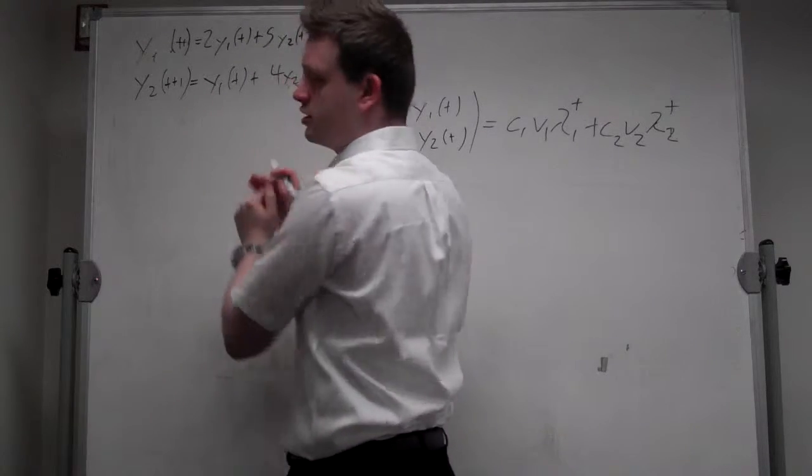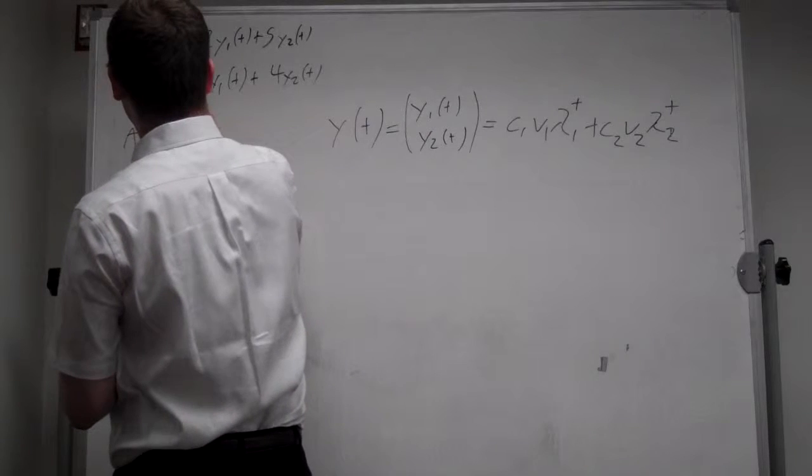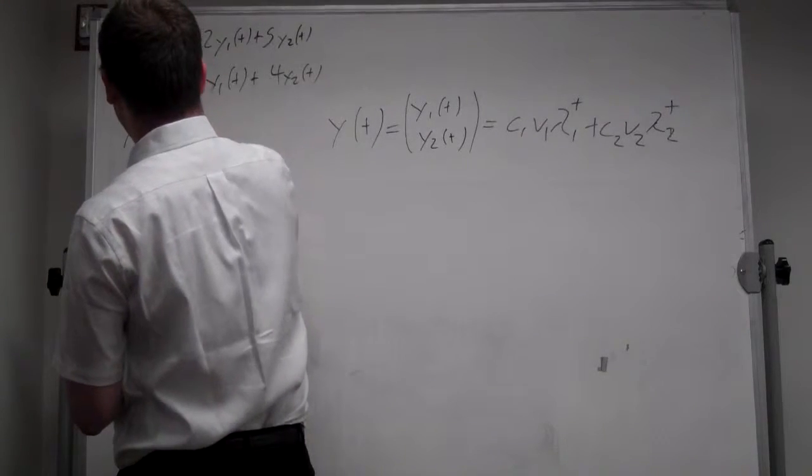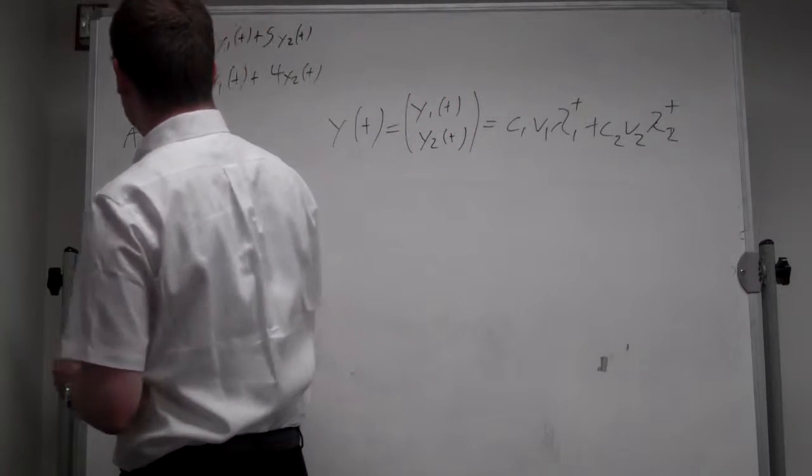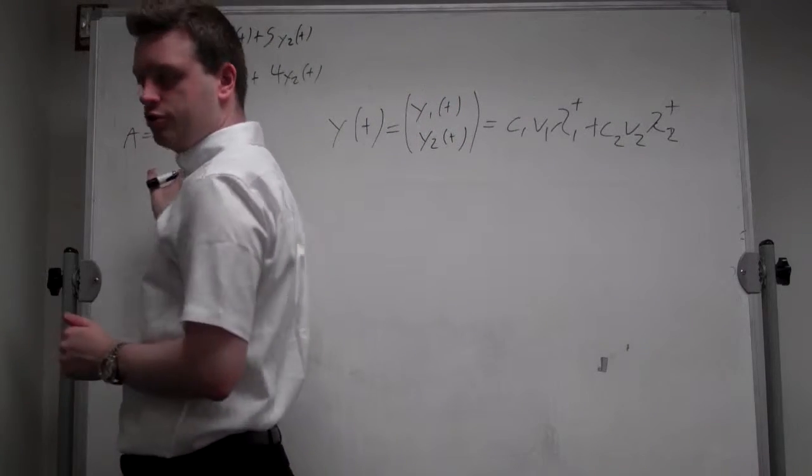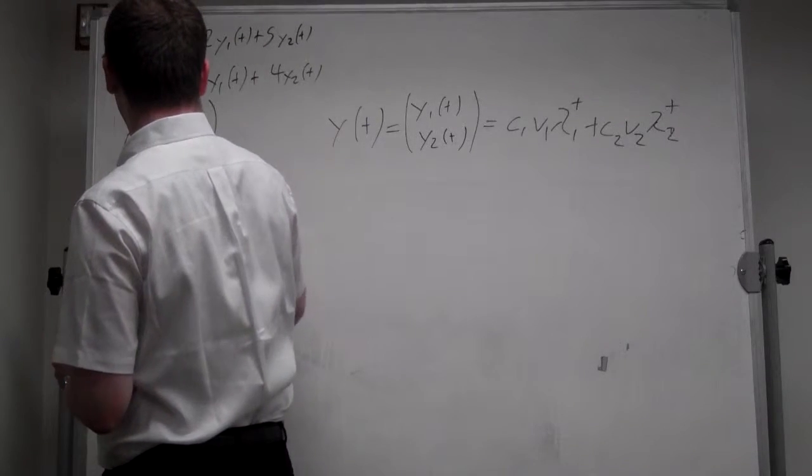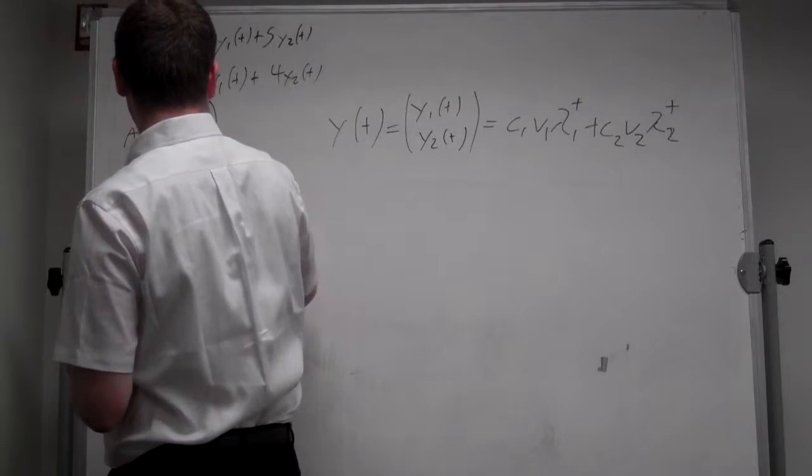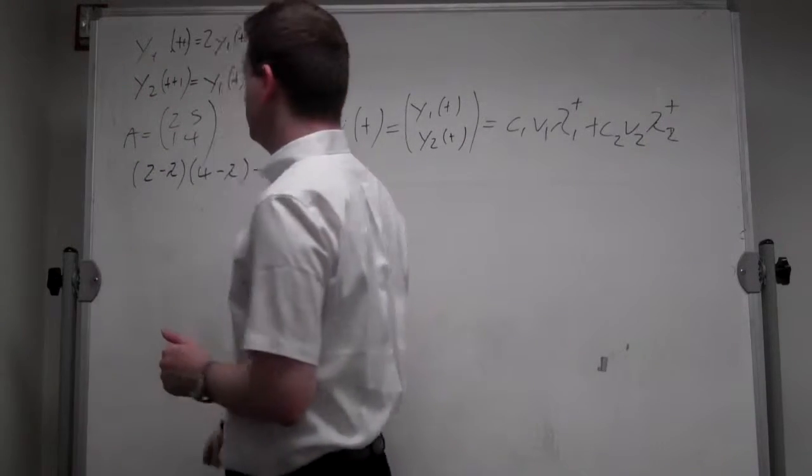So let's find those. So let's write first the system in the matrix. So the A matrix is equal to 2, 5, 1, 4. And based on this matrix, we can get the eigenvalues by the characteristic polynomial. So 2 minus lambda times 4 minus lambda minus 5 equals 0.